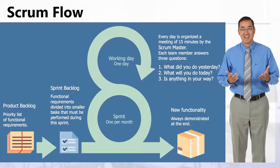Every day you meet for about 15 to 20 minutes — some done meetings run about half an hour for complex projects, but aim for 15 minutes as your stand-up. Each team member answers three questions: number one, what did you do yesterday? Number two, what will you do today? And number three, is anything in your way or blocking anyone? That's the specific Scrum flow as part of agile project management.